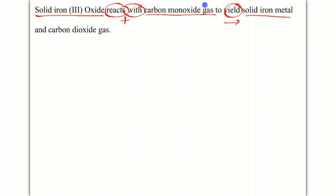And if you see 'and', then we have solid iron metal, and that's gonna indicate a plus sign, and then carbon dioxide gas. In addition to 'yields', you may see the word 'forms' or 'produces', and those also indicate that you need to draw an arrow.